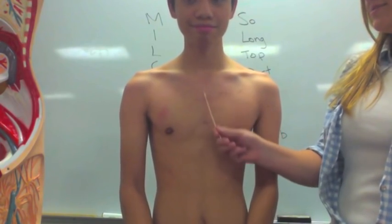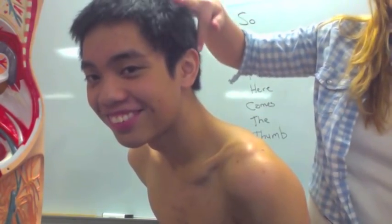His sternum is right here. His sternal angle is going to be right around here. The second rib is going to be right up here. His xiphoid process is going to be right here. His temporal artery — you might not be able to see it very well because of his hair, but it's right in this area. Then you have the temporalis muscle, which is going to be right here on the temporal bone.